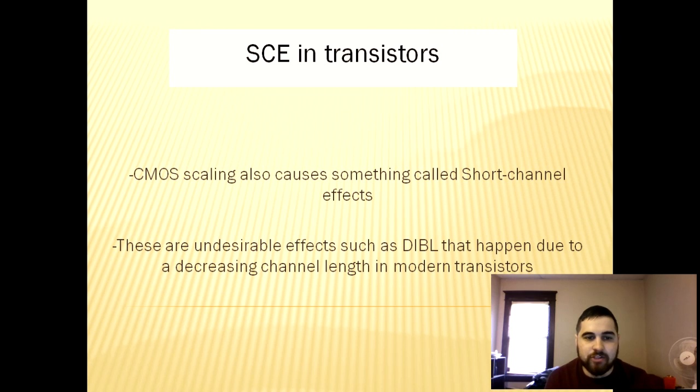Short channel effects are attributed to two main physical phenomena, which are the limitation imposed on electron drift characteristics in the channel and the modification of the threshold voltage due to a shortening channel length over time. There are five total short channel effects that can be distinguished, which are drain-induced barrier lowering and punch through, also known as DIBL, surface scattering, velocity saturation, impact ionization, and finally the hot electron effect.